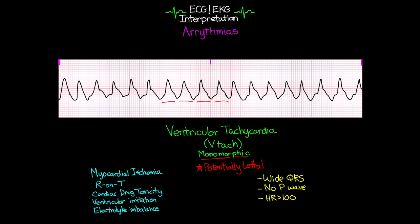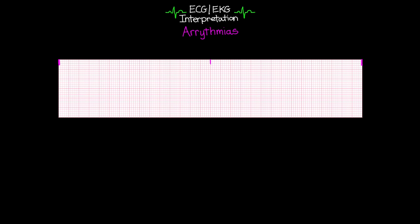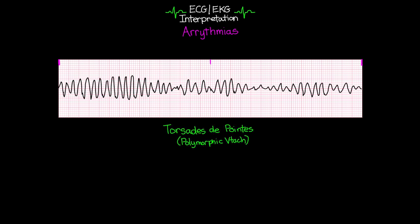Even slower VTACs can deteriorate pretty quickly and progress into an even more lethal ventricular rhythm. Sometimes you'll see heart rates in the 200s or even close to 300 with VTAC. Before we move to that next ventricular rhythm, I want to show another variation — something we call torsades, which is essentially our polymorphic VTAC. The reason we call it polymorphic is because the origination of that irritated ventricular signal is moving around throughout the heart and not coming from the same place.